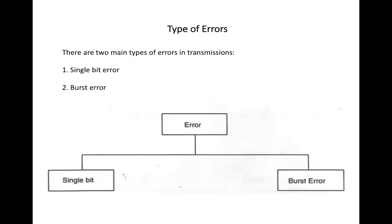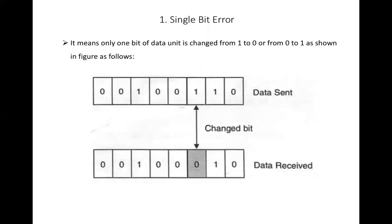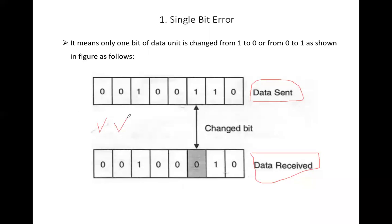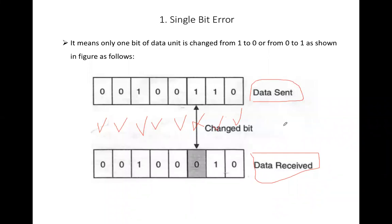Errors can be of two types: single bit error and burst error. As the name implies, single bit error means only one bit is changed between the sent data and the received data. Suppose this is the data sent by the sender and this is the data received by the receiver — you can observe that only one bit is not matching. That type of error, where only one bit has been changed during transmission, is called a single bit error.